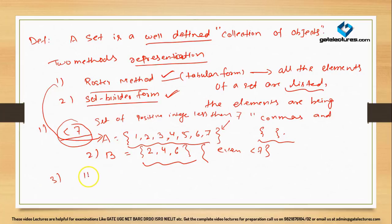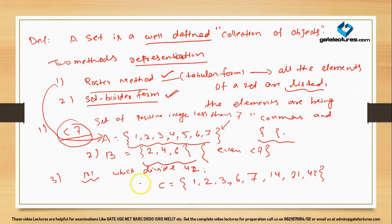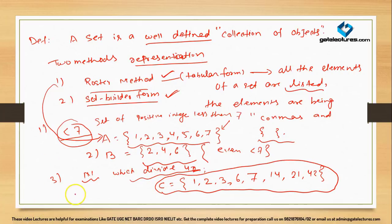Also, the set of all natural numbers which divide 42: set C = {1, 2, 3, 6, 7, 14, 21, 42}. This is known as the roster form for representing a set. The members of a set are known as elements. For example, 6 is a member of A, so we write 6 ∈ A. 9 is not a member of A, so we write 9 ∉ A. This Greek symbol ∈ means 'belongs to'.